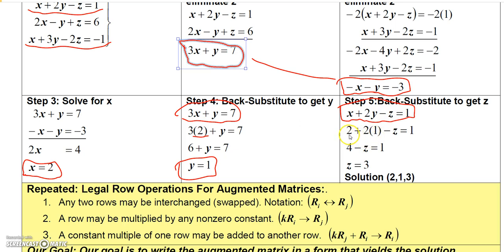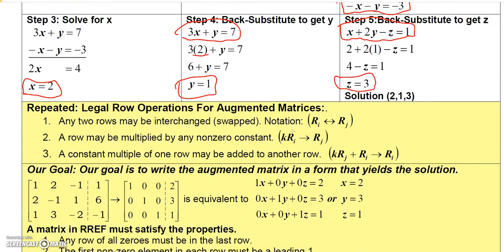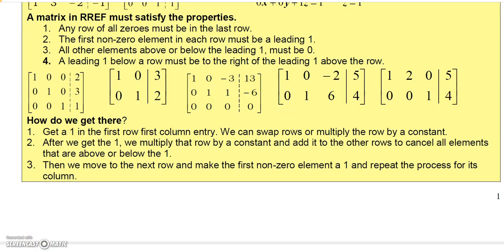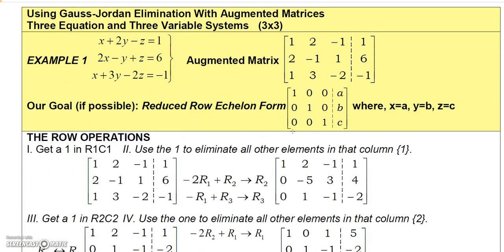Substituting gives me 2 plus 2 times 1 minus z equals 1. Then 2 plus 2 is 4, so 4 minus z equals 1, and you can easily solve that to see that z equals 3. So the solution is x equals 2, y equals 1, z equals 3. Now let's take a look at how we would solve this using matrices.